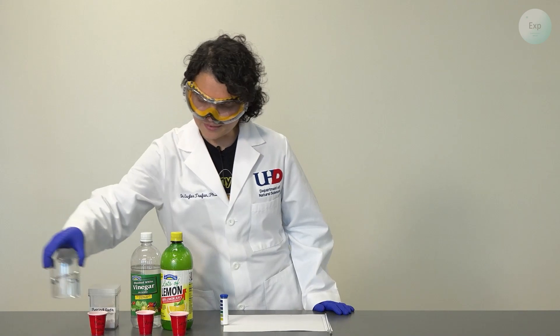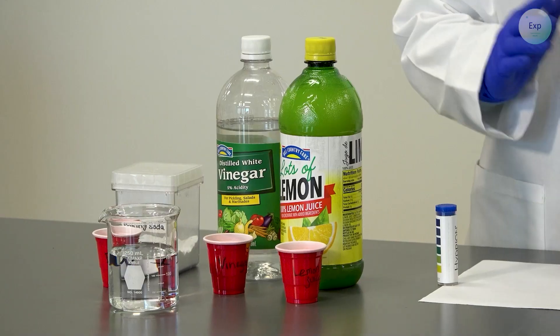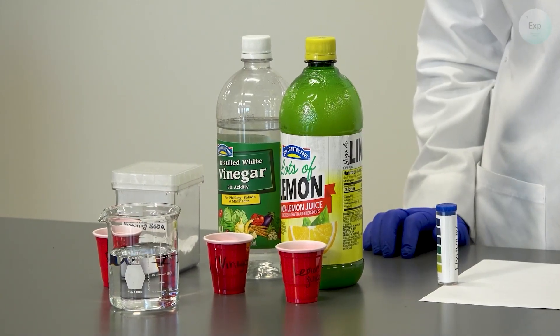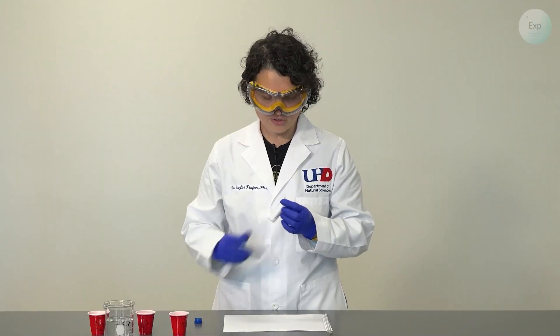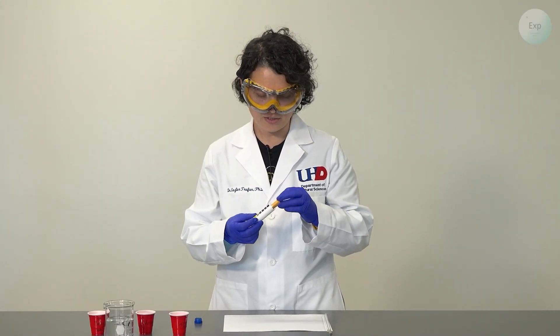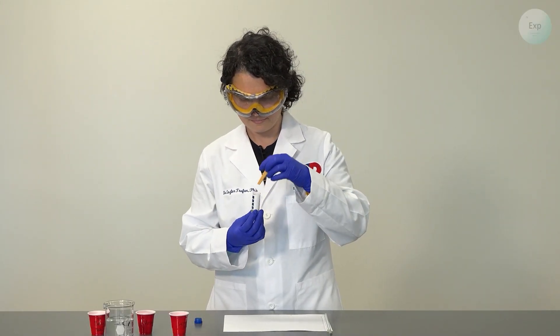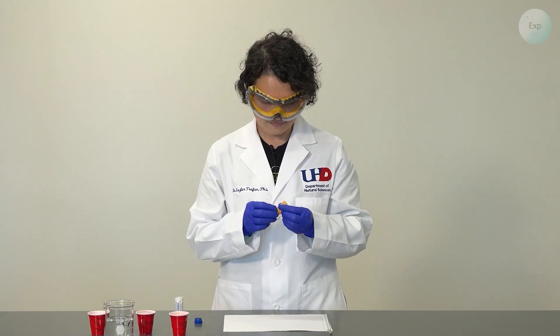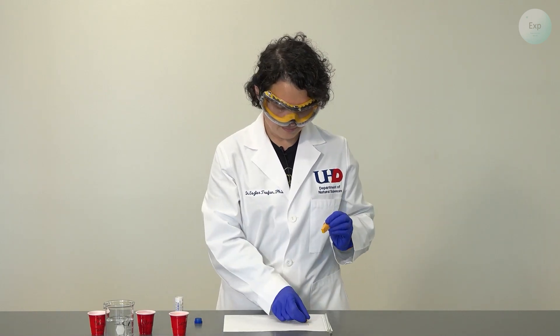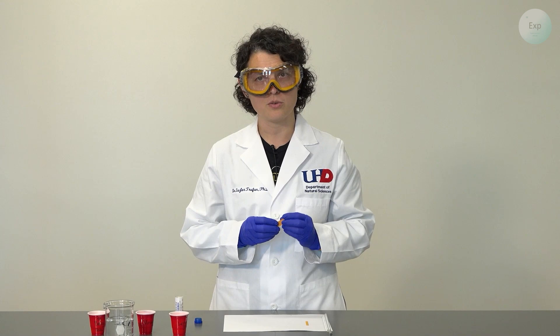And finally I am going to need some deionized water to clean my glass stirring rod in between measurements. So let's get started. The first thing to do is extract the pH paper. And for each measurement you really don't need a whole strip but you can use the whole strip.